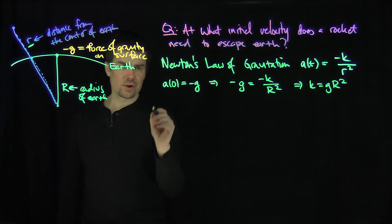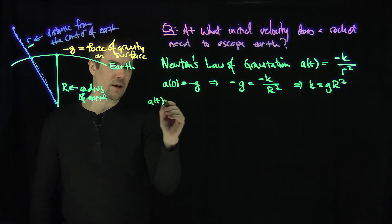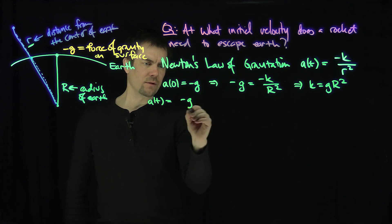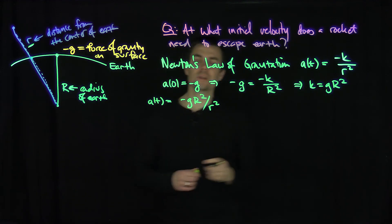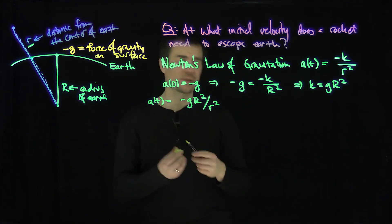What I'm going to do now is say that my acceleration, a(t), is going to be negative gR squared over little r squared, and that's my function of t. So little g and big R are constants in this problem.